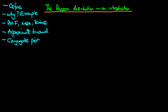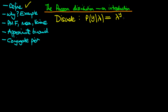Starting by defining the Poisson distribution, the first thing to note is that it is a discrete distribution with a likelihood given by the probability of y given a parameter lambda, which is equal to lambda to the power y times e to the power minus lambda, all divided through by y factorial.